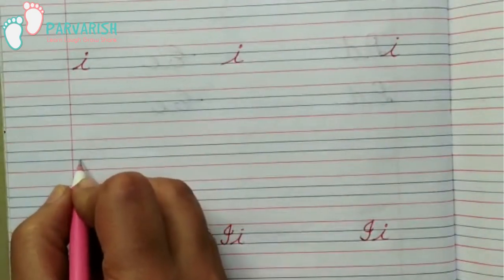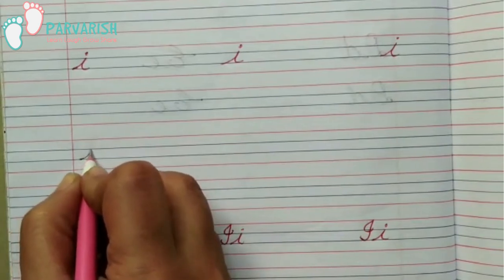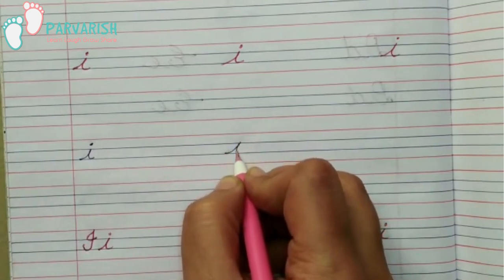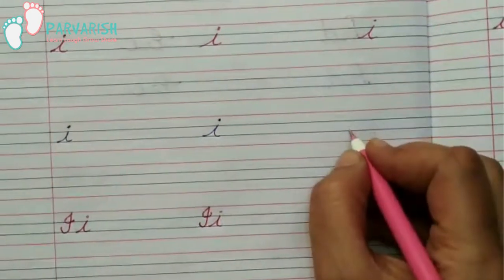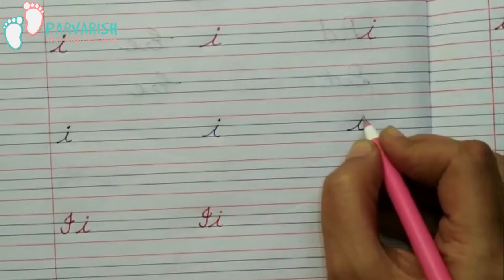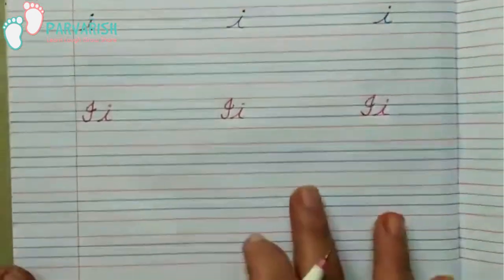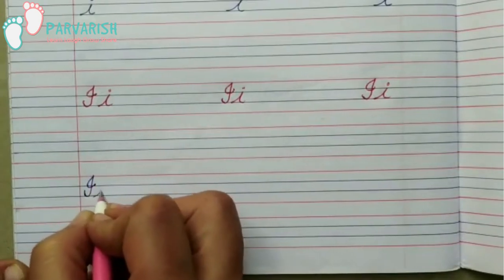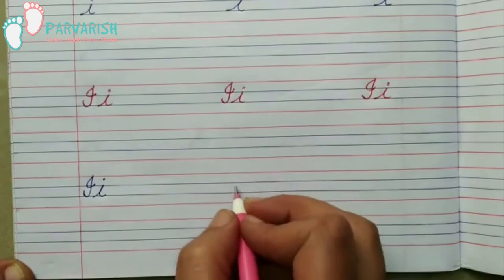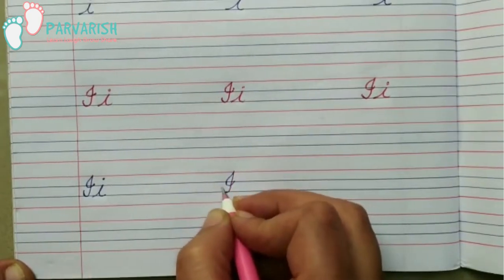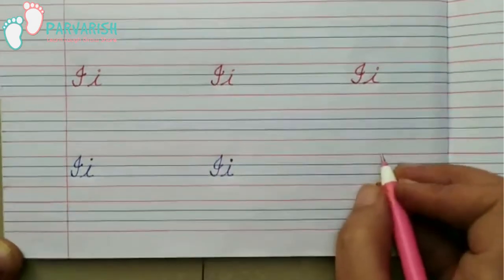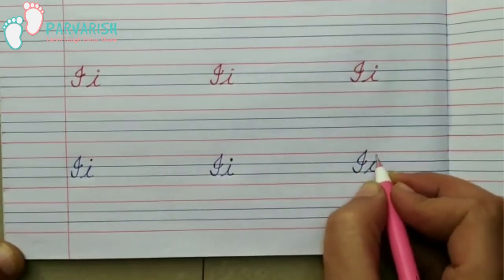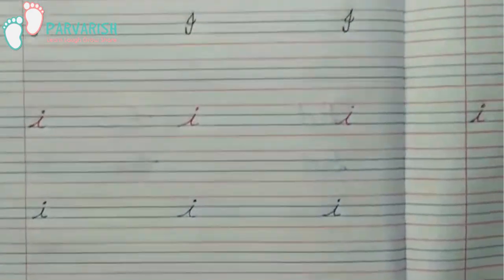Now we will try to make a small cursive I. We put our pencil on the third line and go up, come down like this. Let's try again — go up, down, go up and down. Now we will try to make both capital cursive I and small cursive I together.